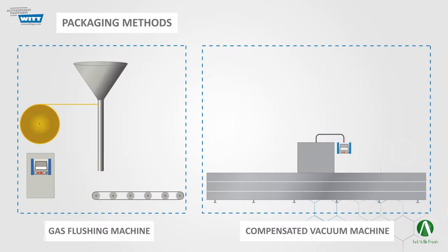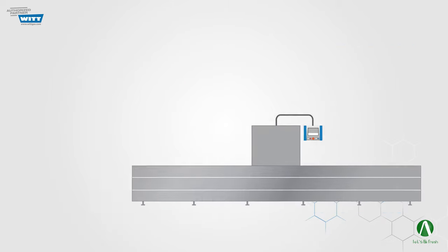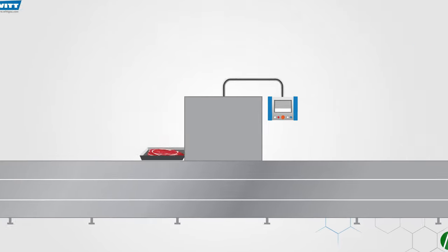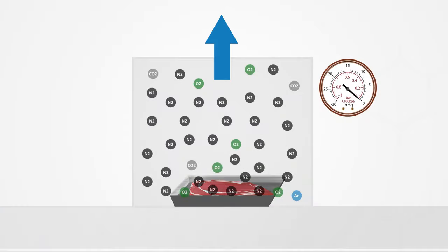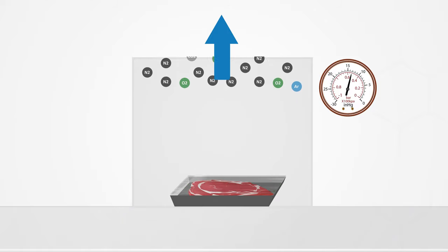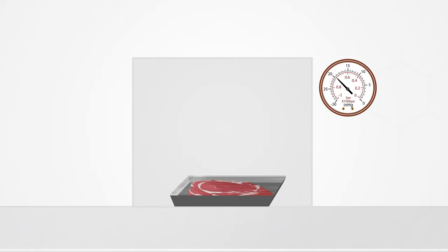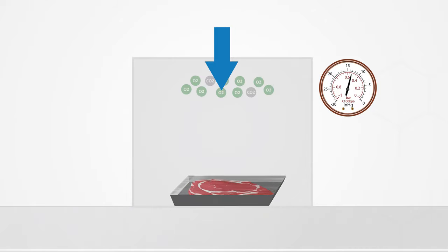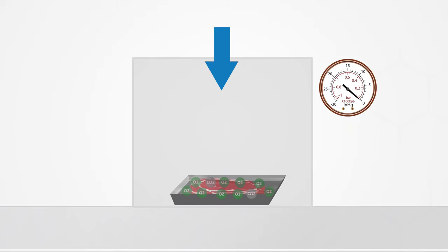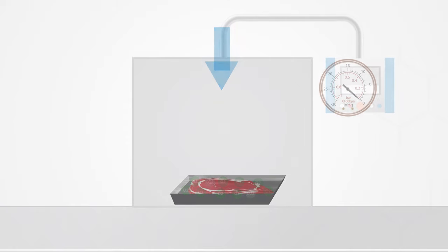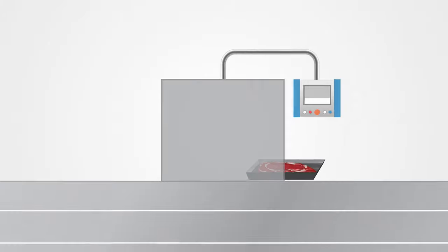The second method is called compensated vacuum. In this method, the machine first removes the air inside by pulling a vacuum on the atmosphere within the package, and then breaks the vacuum with the desired gas mixtures. Finally, we have our food packed.